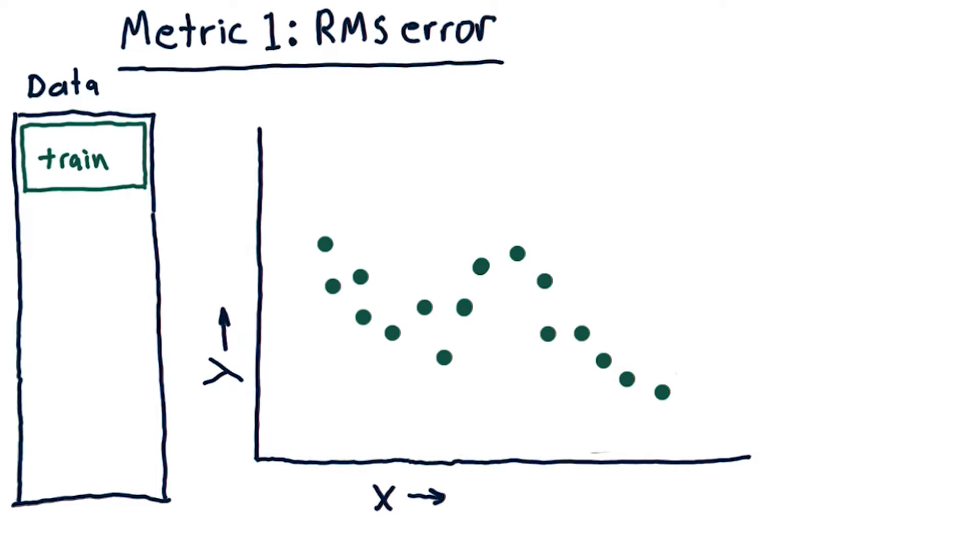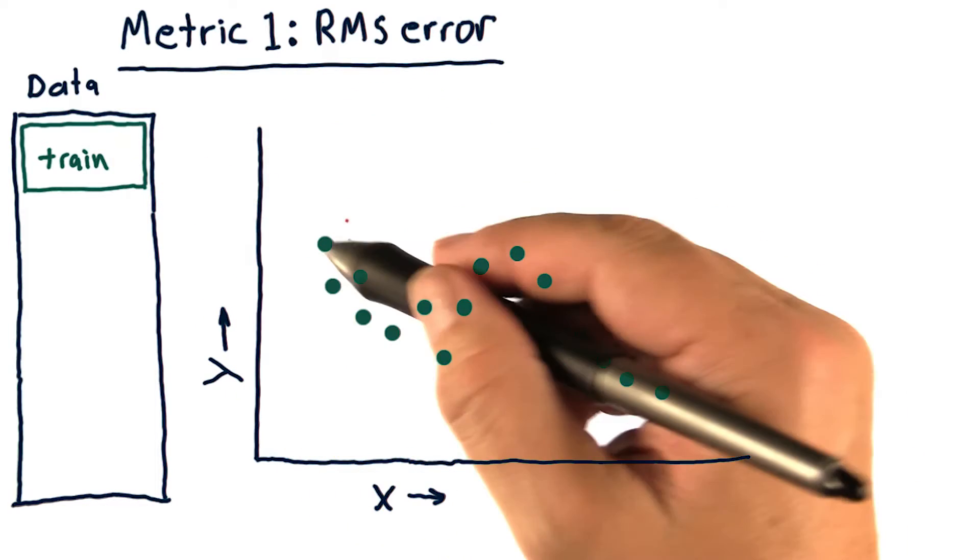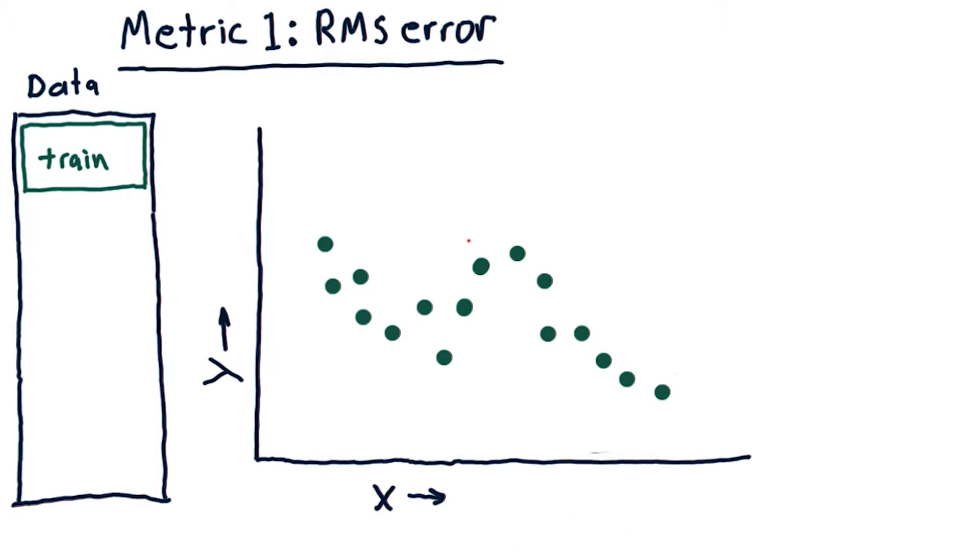A standard way to measure error is called RMS error. Let me show you how to calculate this. Let's suppose we use this data, which are these green points, to build a model.